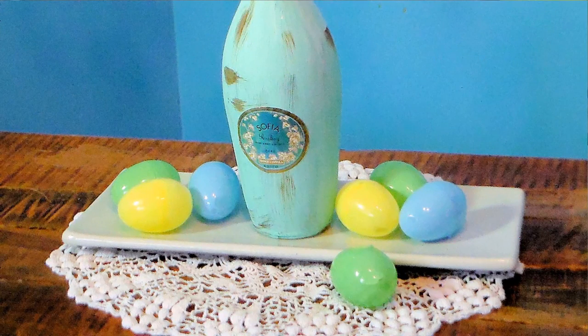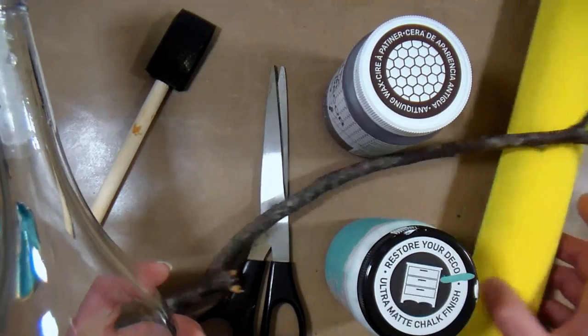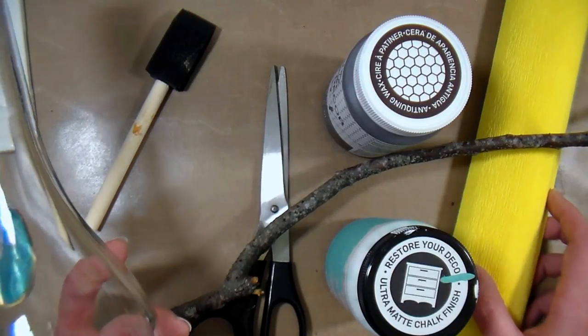Hi there, Lindsay here, The Frugal Crafter. Today I'm going to show you how to make a gorgeous table centerpiece or mantel decoration using crepe paper from our sponsor Paper Mart. You can find them online at www.papermart.com.